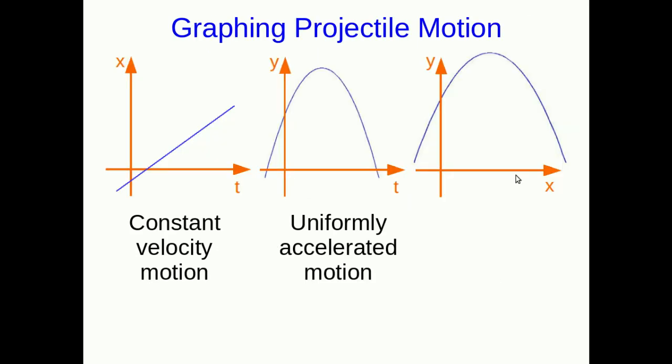We already know what the graphs of those two types of motion should look like. Constant velocity motion gives you a straight line position versus time graph. Uniformly accelerated motion gives you a parabola. When you combine those you get this resulting trajectory. A lot of students associate the word trajectory with projectiles, but trajectory just means the path followed through space by any object. In the particular case of a projectile the trajectory is a parabola, but a trajectory can be basically any shape.